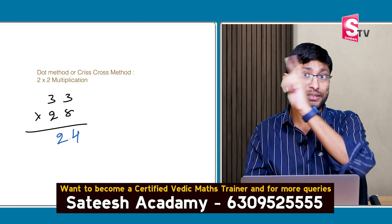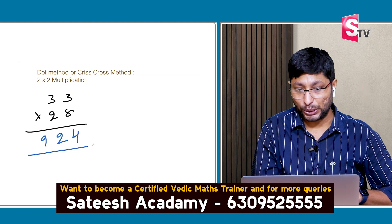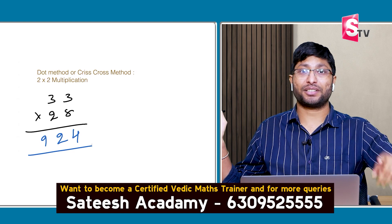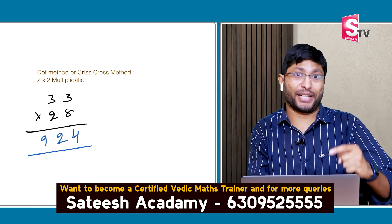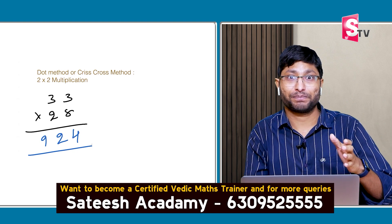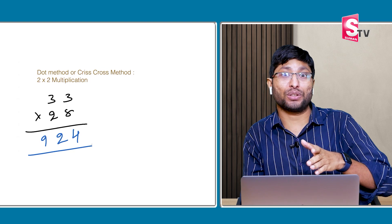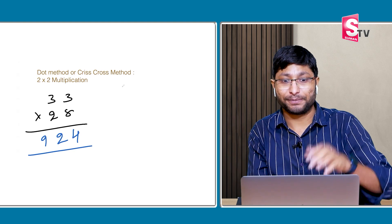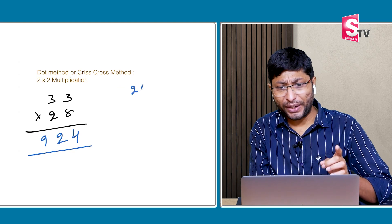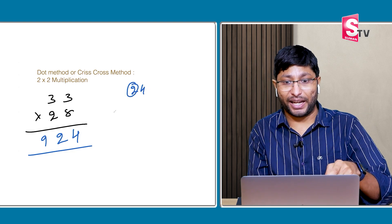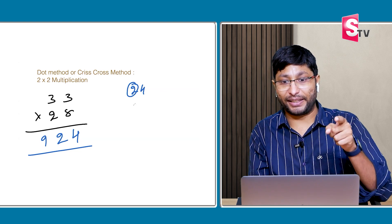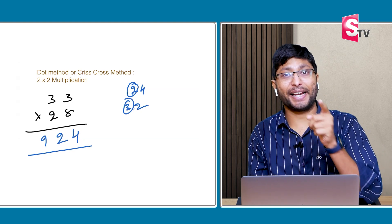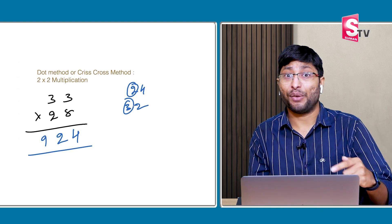Step 3: 3 × 2 = 6. Plus 3 carry = 9. Answer is 924. Everything in the mind. The importance of Vedic Maths is solving calculations in the mind, improving concentration skills. Understand the concept, practice the concept, and then start doing it in the mind.